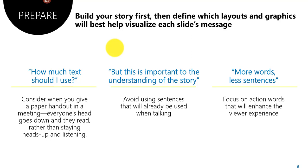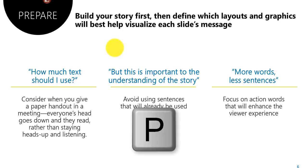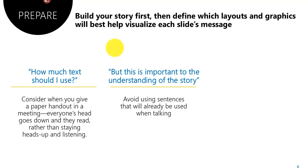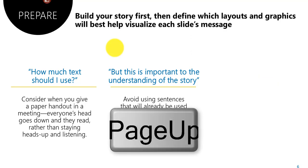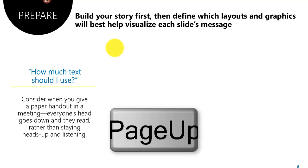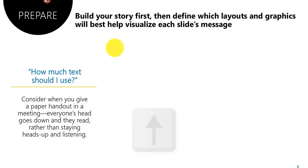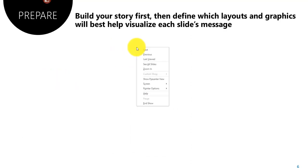Now let me show you four ways to go to a previous slide. Note that sometimes it won't go to a previous slide but to a previous animation step. You can press P for Previous, press Page Up, press the Up arrow, or right-click and select Previous.